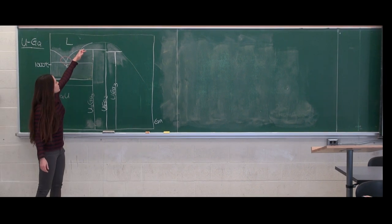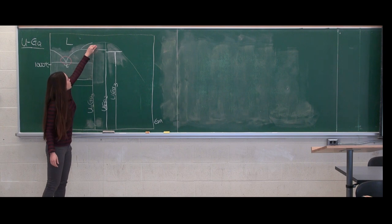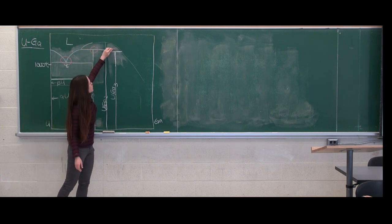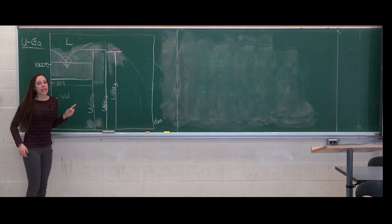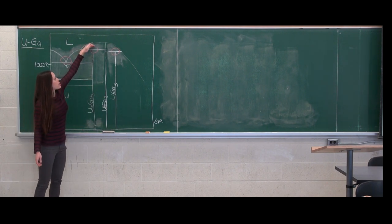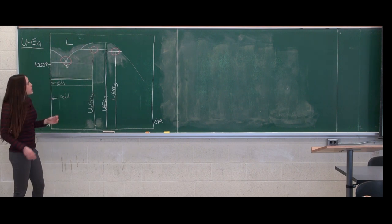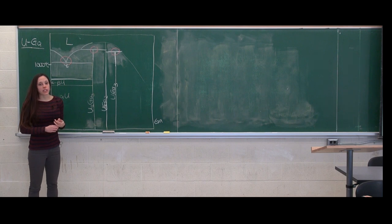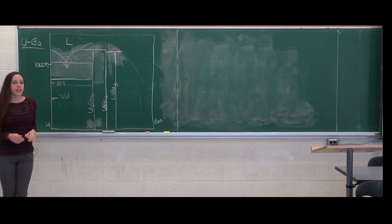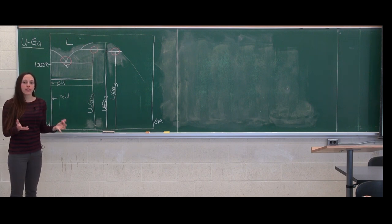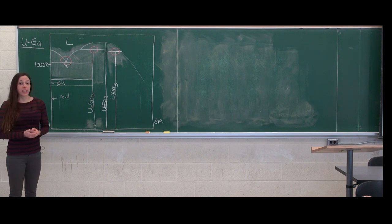Are there any other points where we have three phases existing concurrently? The first one is up here, and at this point we do as well. In both of these cases we are going from a liquid plus solid solution to a single solid solution on this line. These are both peritectic reactions. Looking at the rest of the phase diagram, there don't appear to be any other places where we have three phases existing together, so we're done with Part A.